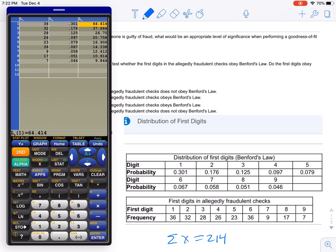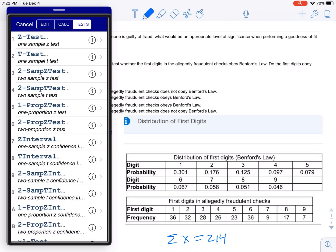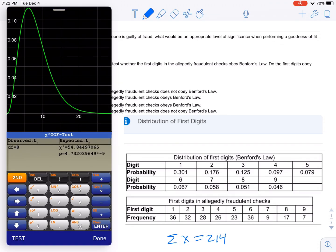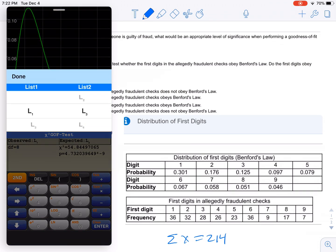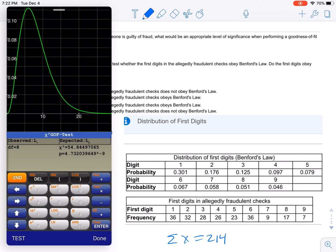...it gives me all those values in L3. Those are the expected values I need when I do the chi-squared goodness of fit test. Stat, test, chi-squared goodness of fit test. I put in L1 for the observed, L3 for the expected. Degrees of freedom are eight because there's nine categories, so nine minus one is eight.